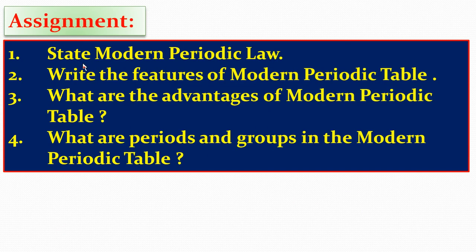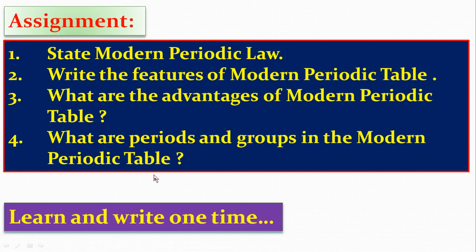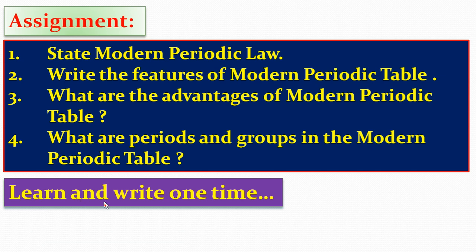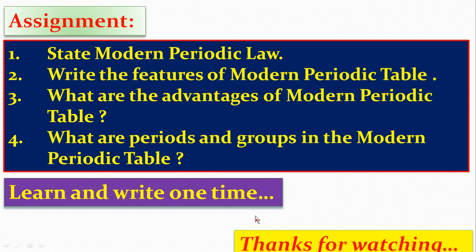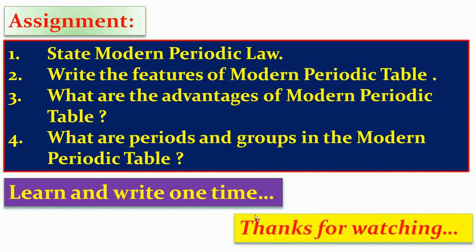Now for the assignment: first, state the Modern Periodic Law. Second, write the features of the Modern Periodic Table. Third, what are the advantages of the Modern Periodic Table. Fourth, what are periods and groups in the Modern Periodic Table. These questions you have to learn and write one time. Thank you, students.